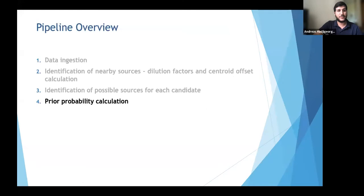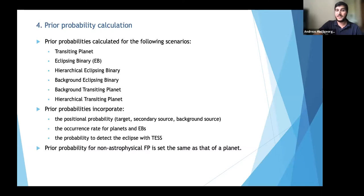The fourth step is prior probability calculation for various scenarios including transiting planets and eclipsing binary configurations. Prior probabilities incorporate the positional probability — derived from centroid offset calculations — whether the signal originates on the target, a secondary source, or background source, as well as occurrence rates for planets and eclipsing binaries and the probability to detect the eclipse with TESS. For non-astrophysical false positives we assign the same prior probability as for a planet — a known flaw we're looking to improve.